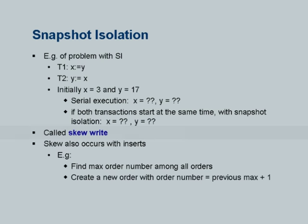This kind of write is called a write skew, because both of them are reading something and then writing other data items. If both transactions write the same data items, there is no problem. The problem here is they are writing different data items.